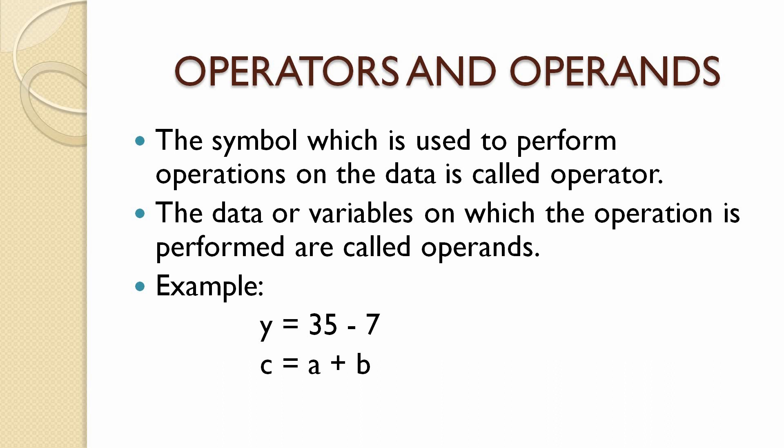Also, c equal to a plus b is an equation where the addition symbol is the operator as it adds both the values of a and b. If we come to operands, the numbers 35 and 7 are operands as the operation of subtraction is being performed on them. In the same way, in the second example, the variables a and b are called operands as the operation of addition is being performed on them.